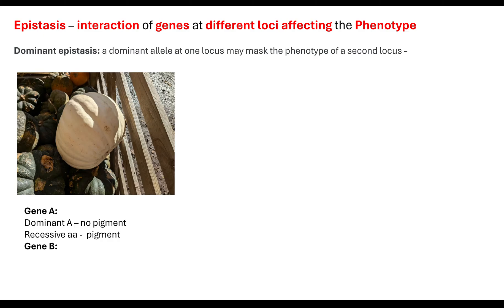There is a second gene, Gene B, which if it's dominant is going to give the colour orange, and if it's recessive will give the colour green.